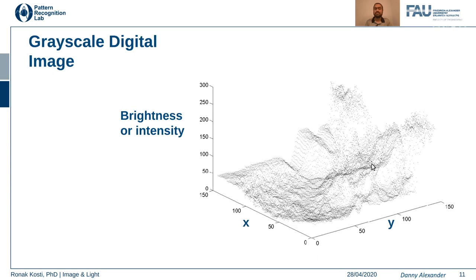This is a 3D view of brightness or intensity values for a 2D image. For every x and y location in the image, the vertical axis represents how much intensity that particular location has. This is a basic 3D representation of a grayscale image.